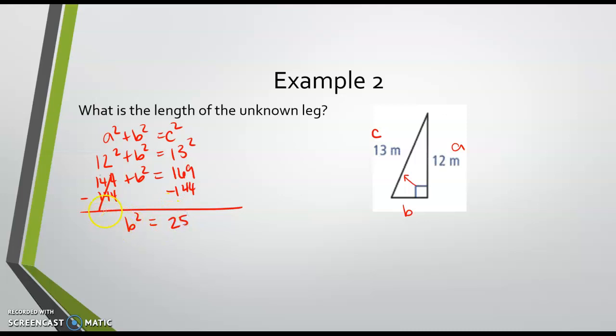Again, this is b squared, not b. So to get b by itself, we're going to take the square root, and so then we get b equals 5. And that's my answer - b is 5.